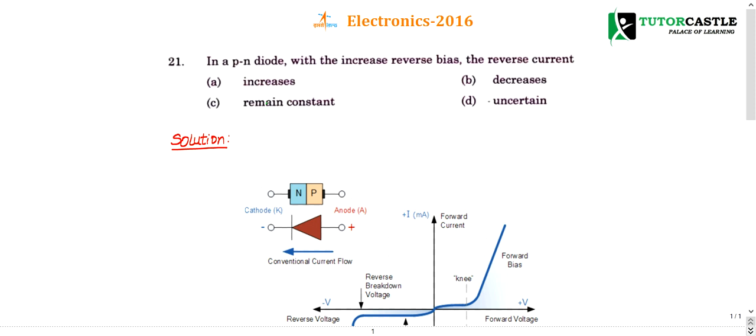Question number 21: In a PN diode, with the increase in reverse bias, the reverse current will be dash - increase, decrease, remains constant, or uncertain. This question is quite simple; it hardly takes 10 to 15 seconds to answer if you know the V-I characteristics of a PN junction diode.